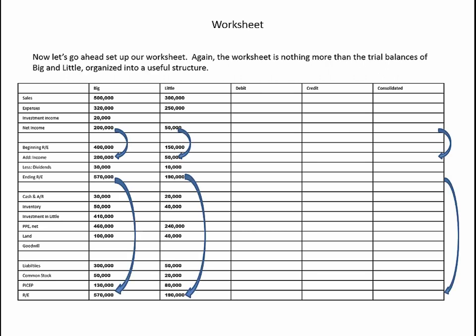Let's fill in the worksheet and get the pattern down for the flow of information. We start at the top computing net income: sales minus expenses plus investment income equals net income. We take that net income number and transfer it down to the statement of retained earnings where it says 'add income.' We complete the statement of retained earnings — beginning retained earnings plus income less dividends equals ending retained earnings — and take that ending retained earnings figure down to the balance sheet. Whenever we do any elimination entries, we're always adjusting the beginning retained earnings figure. The ending retained earnings in the balance sheet is simply the result we bring down from the statement of retained earnings.